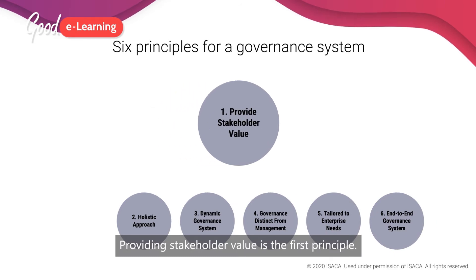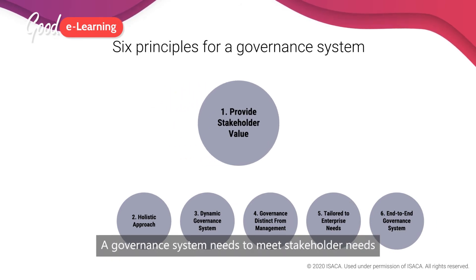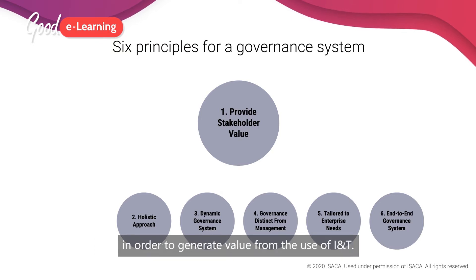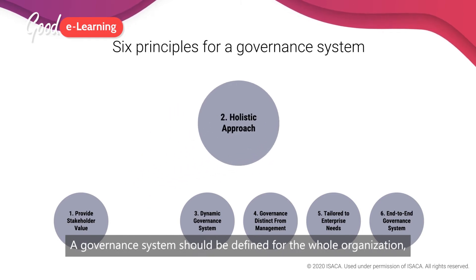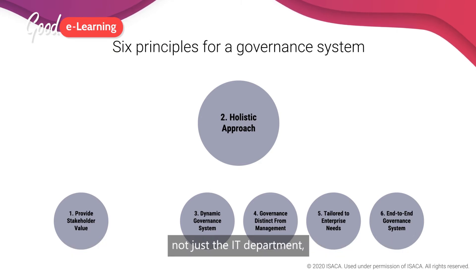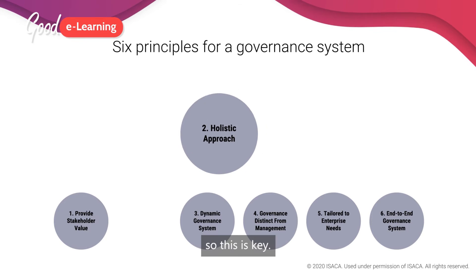Providing stakeholder value is the first principle. A governance system needs to meet stakeholder needs in order to generate value from the use of IT. The second principle describes the importance of a holistic approach. A governance system should be defined for the whole organization, not just the IT department, so this is key.